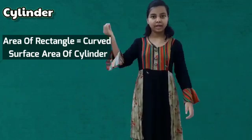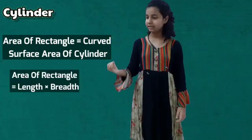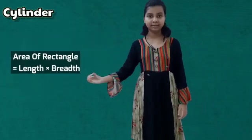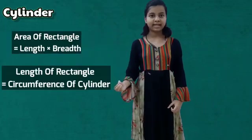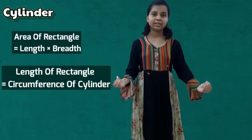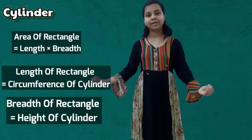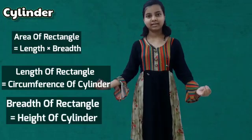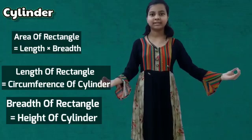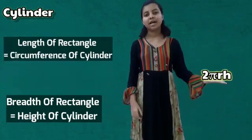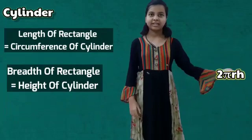We know the formula of area of rectangle is length into breadth. The length of the rectangle is nothing but the circumference of the cylinder and the breadth of the rectangle is nothing but the height of a cylinder. So we get the formula that is 2πrh.